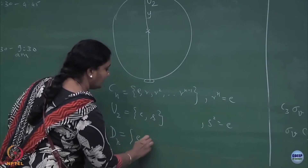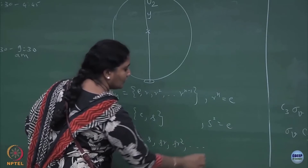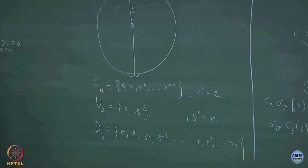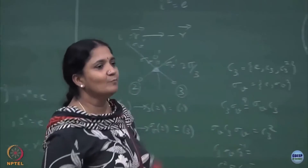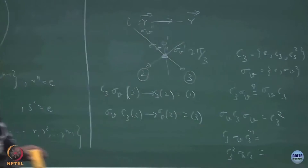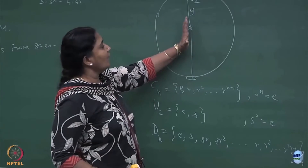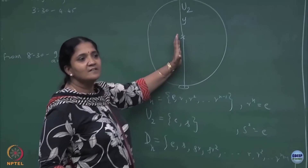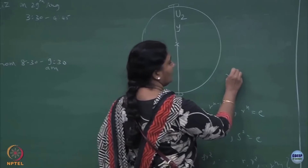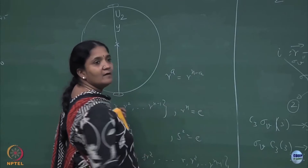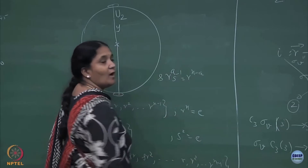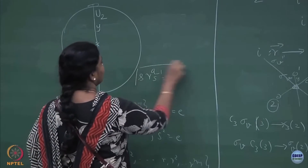The elements of Dn are: {E, s, sr, sr², …} and {r, r², …, r^(n−1)}. For conjugacy classes, you need to determine what happens when n is odd versus even. One key result is that r^a is conjugate to r^(n−a) — that is, there exists an element s such that s·r^a·s⁻¹ = r^(n−a).